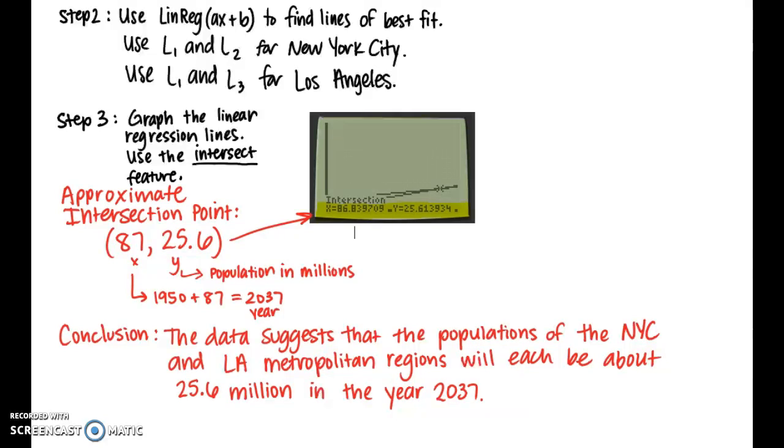The 87 represents the year since 1950, so that means the year 2037. And the y represents the population in millions. So here's our conclusion. The data suggests that the populations of the NYC and LA metropolitan regions will be about 25.6 million in the year 2037.